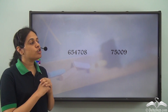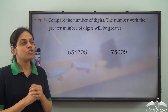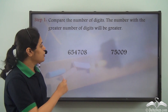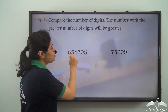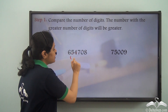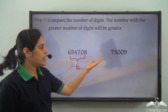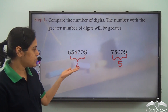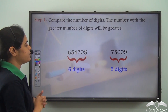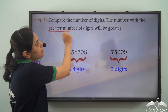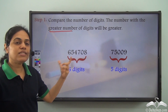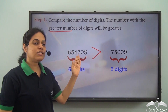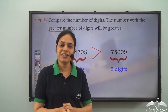The first step is to count the number of digits. The number with the greater number of digits will be greater. In this number there are six digits, and in this number there are five digits. So this number has six digits and this number has five digits.